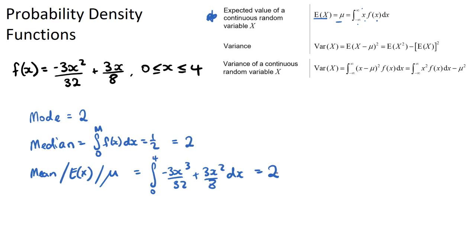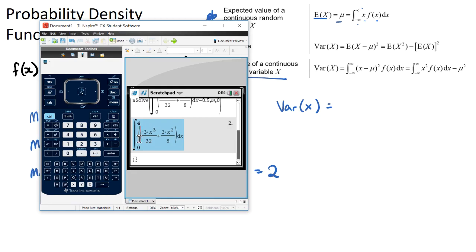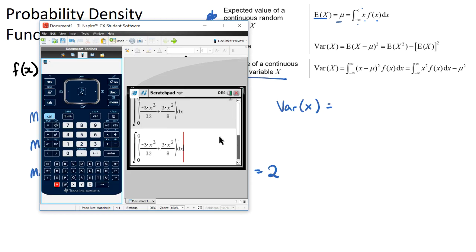Okay, and the other things they might ask for is the variance. So the variance of our continuous random variable—we can use the variance of a continuous random variable formula here, which will be the integral of our function with x squared at the front, and we need to subtract mu squared. We just found that here, so it would be 2 squared. So let's set up that integral.